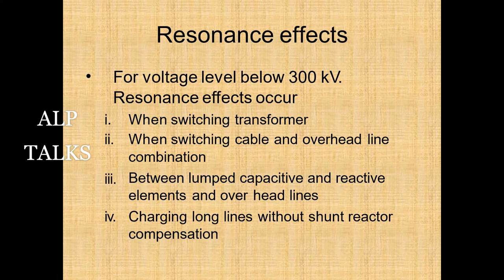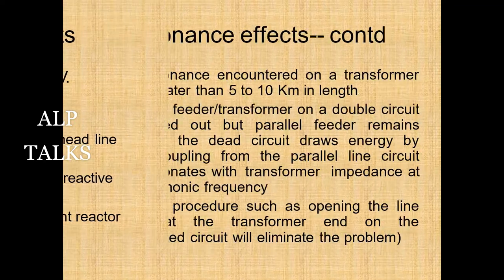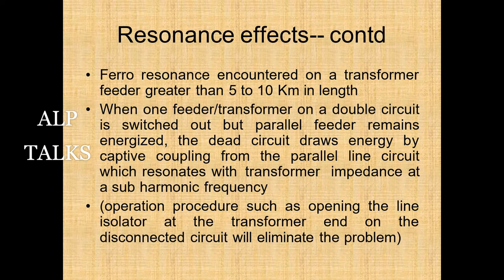Resonance effects below 300 kV occur when switching transformer-cable and overhead line combinations, between lumped capacitance and reactive elements, and when charging long lines without shunt reactor compensation. Ferroresonance is encountered when a transformer with a cable length greater than 5–10 km is involved: when one transformer on a double-circuit is switched out but the parallel feeder remains energized, the dead circuit gains energy by capacitive coupling from the parallel line, which resonates with transformer impedance at sub-harmonic frequencies. Opening the line isolator at the transformer end eliminates this problem.